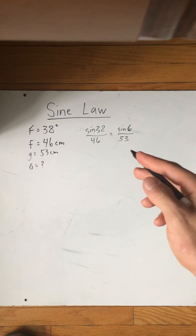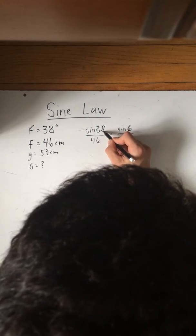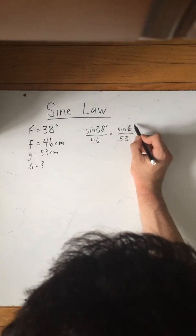You can put the side lengths on top too. Either way, it doesn't really matter. Hold on, that doesn't look good there. Okay, so now we cross multiply.